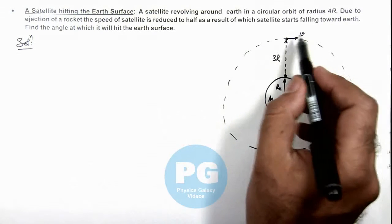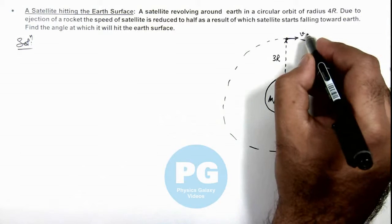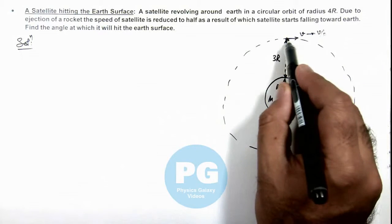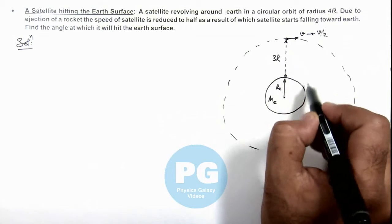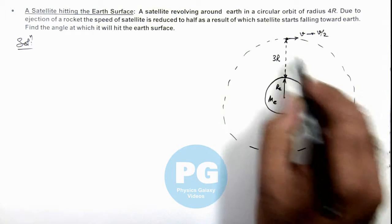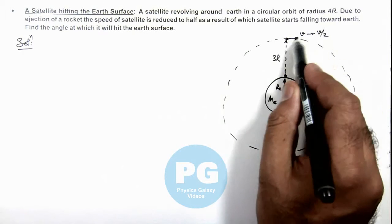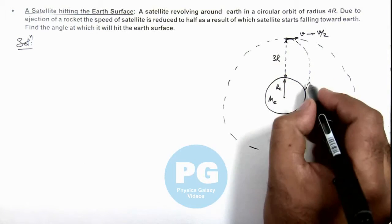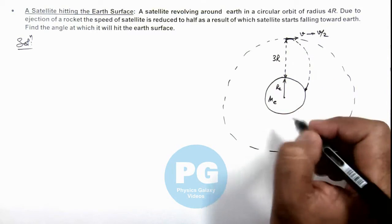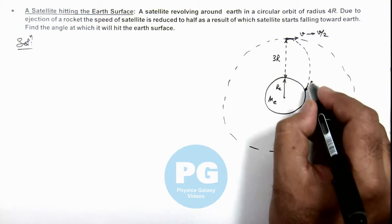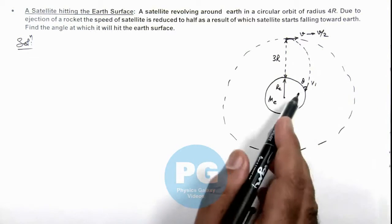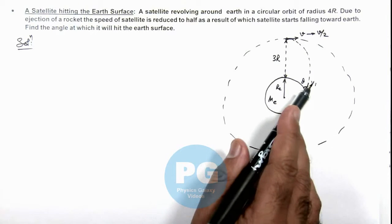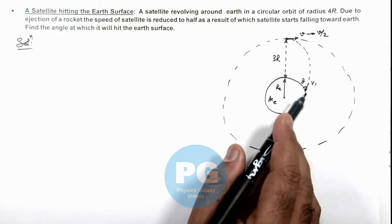But if the speed reduces to half, say if it changes to v/2, it'll start falling to Earth in an elliptical trajectory as the speed is decreased. Finally, it hits the Earth surface with a velocity v1 at an angle θ. We are required to find the angle θ with which the satellite is hitting the surface of Earth.